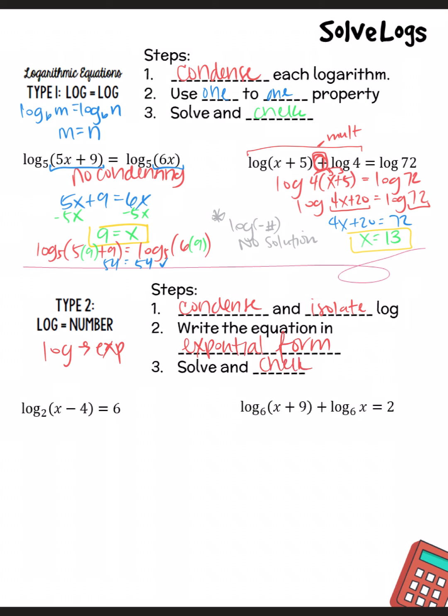So we don't need to condense, no condensing. And we can rewrite this. Remember, this is our base, this is our A, and this is our X. So we've got base raised to the 6 equals the A. So 2 raised to the 6 is 64 equals X minus 4, getting X by itself, plus 4, 68 equals X. Remember to check it. This one works out.